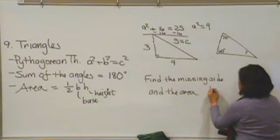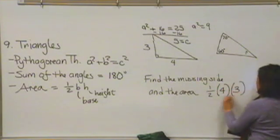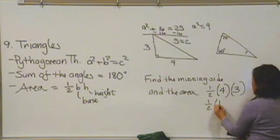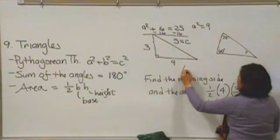Let's go ahead and find the area. The area is going to be 1 half times the base times the height. In other words, 1 half times 12. This triangle here would have an area of 6 square units.